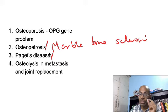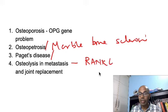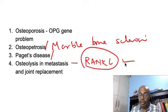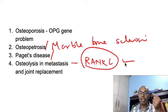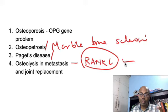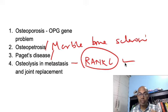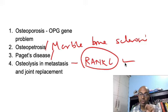Osteolysis in metastasis is a frequently asked question. Why does osteolysis occur in cancer? It is because cancer cells themselves directly release RANK ligand. This RANK ligand goes and activates the osteoclast, causing bone resorption and lysis. So if asked what causes osteolysis in cancer — the answer is RANK ligand released directly from the cancer cells attaching to RANK on the osteoclast. Note: it is not osteoprotegerin; osteoprotegerin would decrease osteolysis.